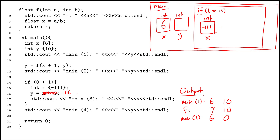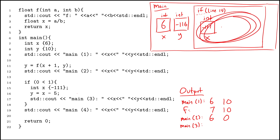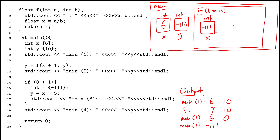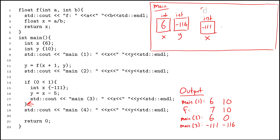I set main's y to negative 116. Then I hit line 17, printing more output: main 3, then x, then y. I'm still inside the if statement's scope, so I go looking for x and find it there — negative 111. Then I go looking for y — there's no y in here, so I escape from the box and find y in main's scope — negative 116.